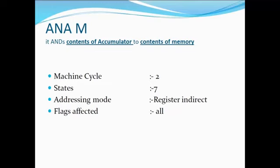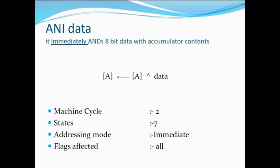Next we have ANAM. It ANDs the contents of the accumulator with the contents of memory. It has two machine cycles, seven states, register indirect addressing mode, and all flags are affected. In ANI data, it immediately ANDs 8-bit data with the accumulator contents. It has two machine cycles, seven states, immediate addressing mode, and all flags are affected.